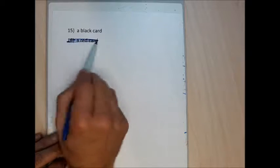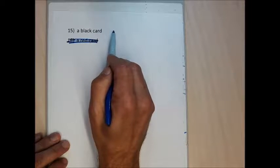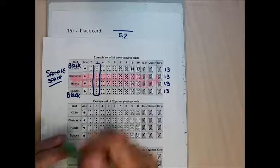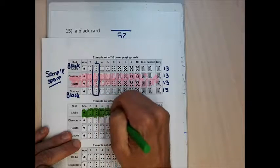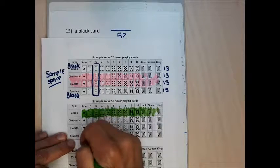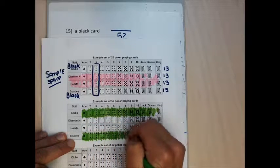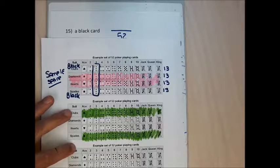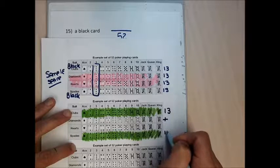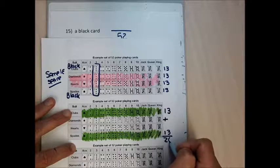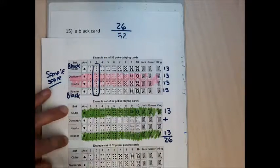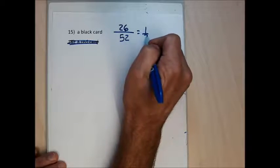For problem 15, the probability of getting a black card: denominator is 52. The black cards are clubs (13) and spades (13), giving 26 black cards total. The numerator is 26 — the event of drawing a black card is getting a spade or a club. The probability is 26/52, which reduces to 1/2.